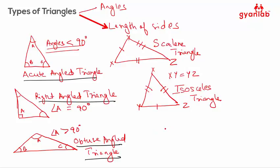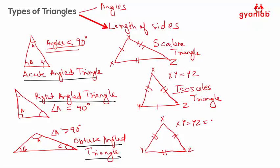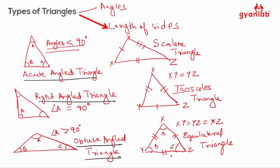What if all the sides were equal in a triangle? Here XY equals YZ equals XZ. In that case it's an equilateral triangle. A very unique property of an equilateral triangle is that all the angles — angle A, angle B, and angle C — are equal to 60 degrees.